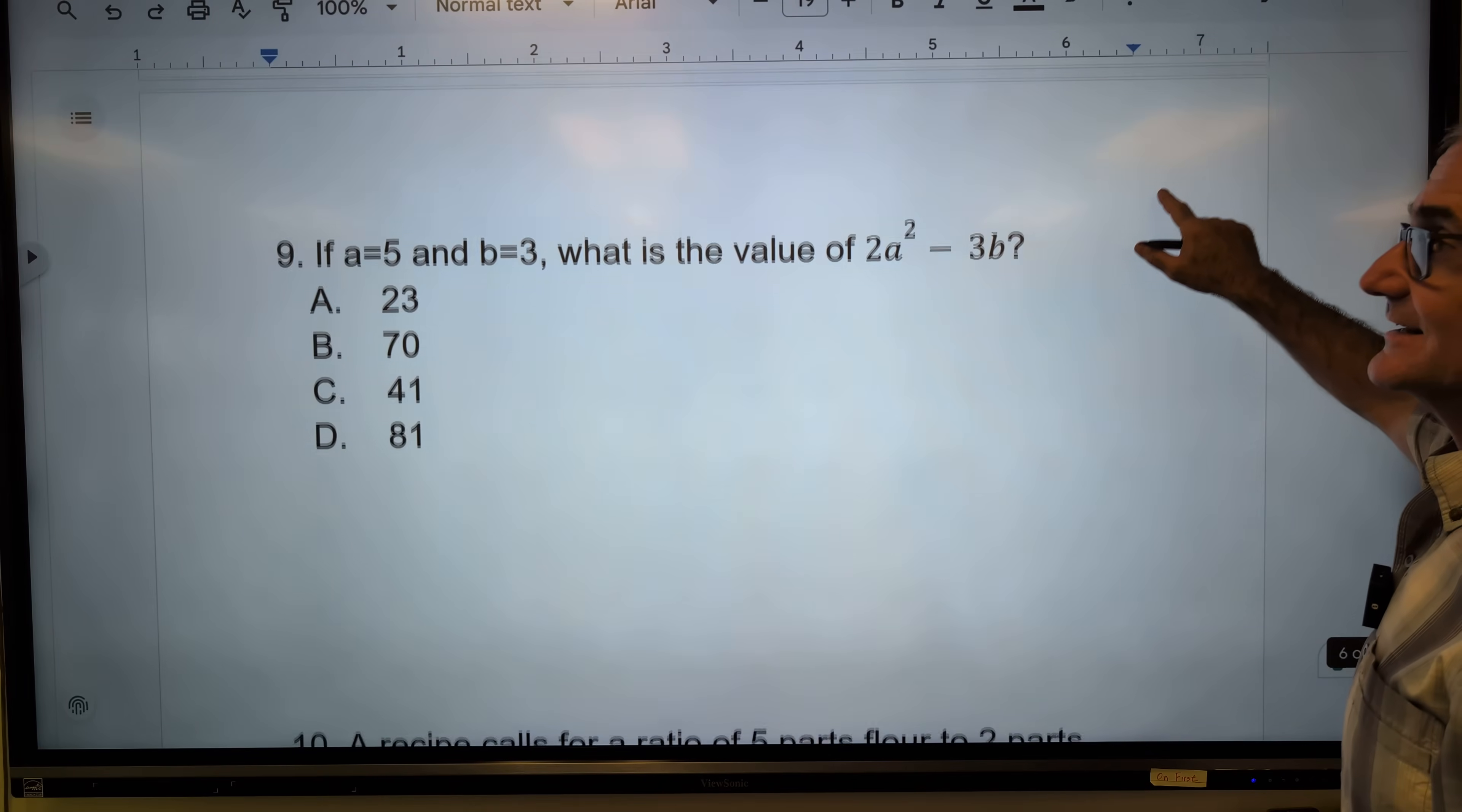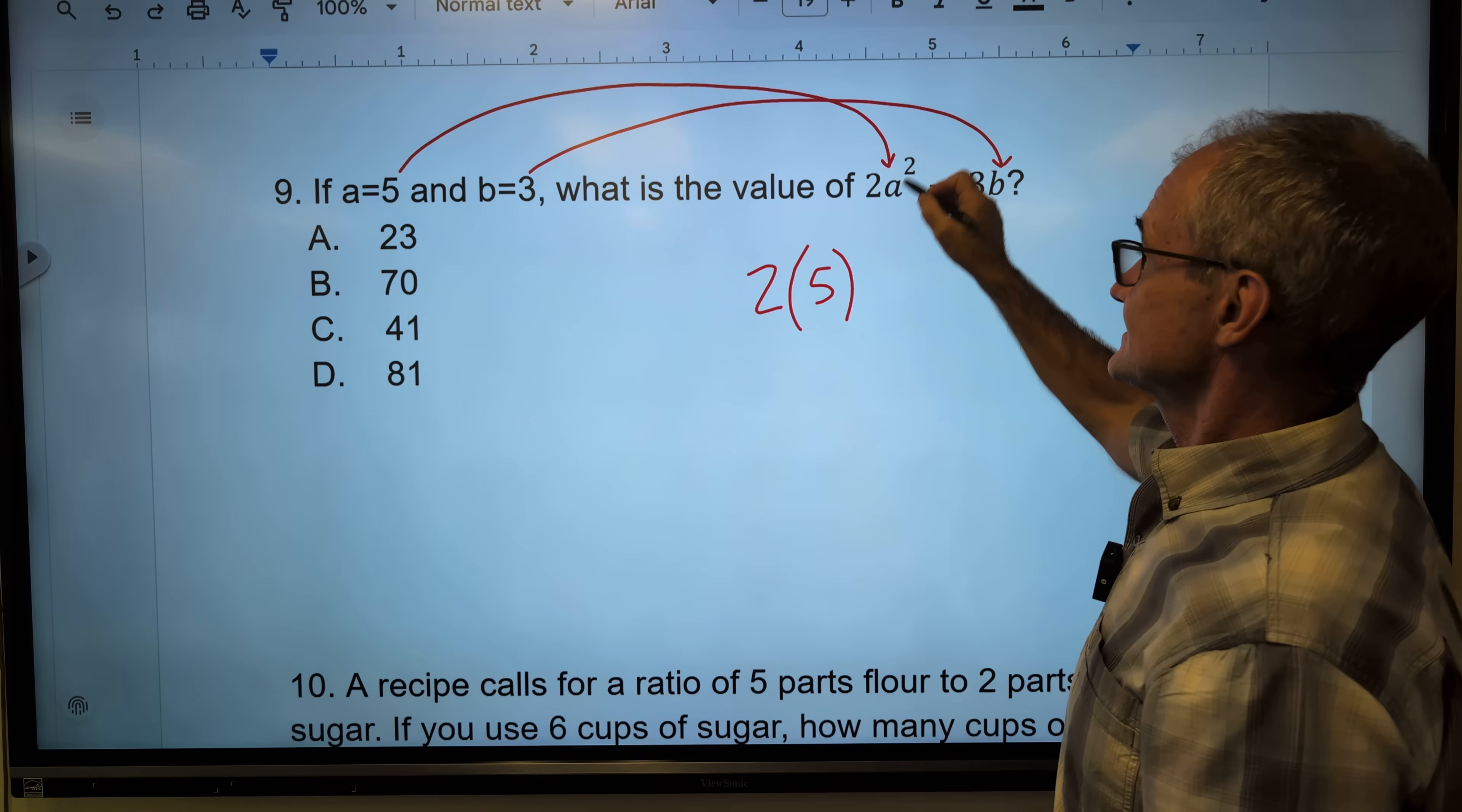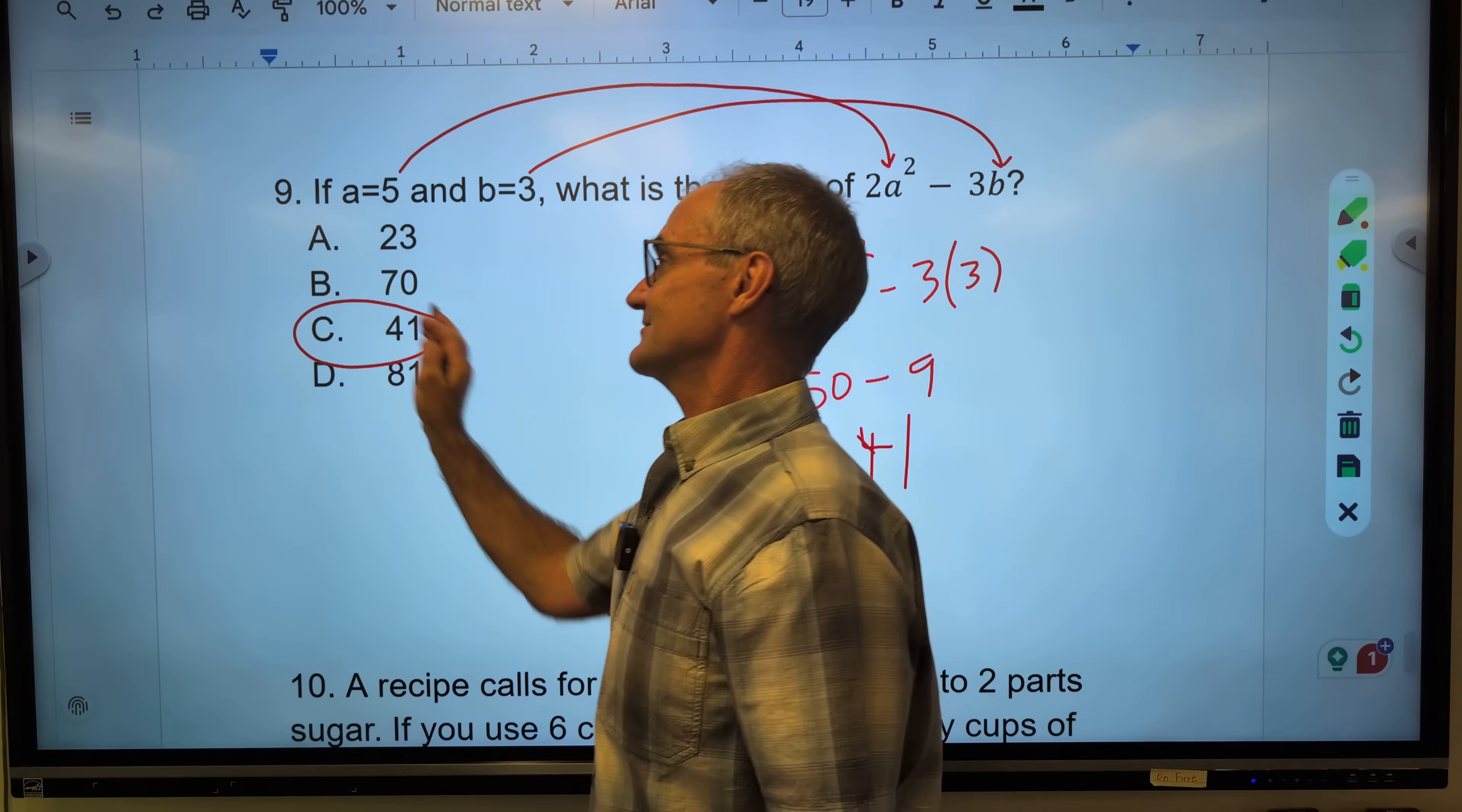Only a couple more problems right here. I have a couple values for A and B. I'm going to take those values and plug them in. The trick is, don't forget order of operations. So I take that A, plug it right in there. I take that B, plug it right in there. So I have 2 times A. I'm saying A is 5 squared minus 3 times that value of B, 3. I've got to do my exponents before multiplication. So 5 squared is 25. 25 times 2 is 50. 50 minus 3 times 3. 50 minus 9, 41. Correct answer, answer C.